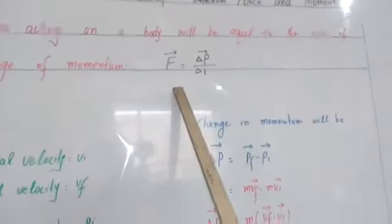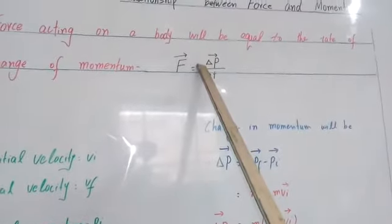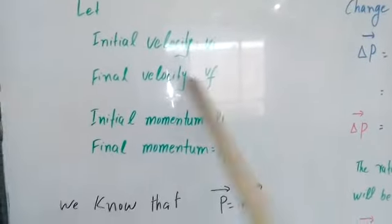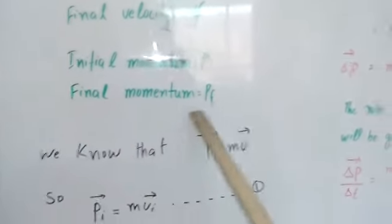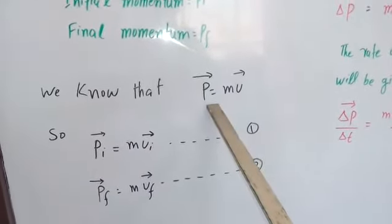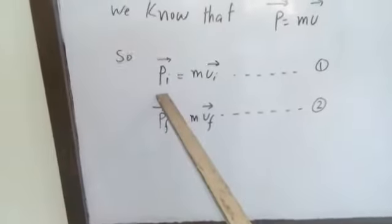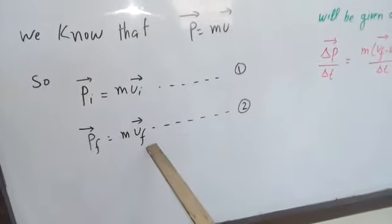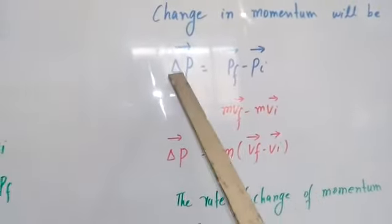और mathematically, force is equal to change in momentum — यह जो triangle जैसी चीज़ है इसको delta बोलते हैं, और यह change को show करता है। जैसे मैंने intro में कहा, एक object पर force लगती है, इसकी initial velocity V_i होगी, कुछ time के बाद V_f हो जाएगी। Starting momentum P_i होगा और final momentum P_f होगा। Change होती है final minus initial।